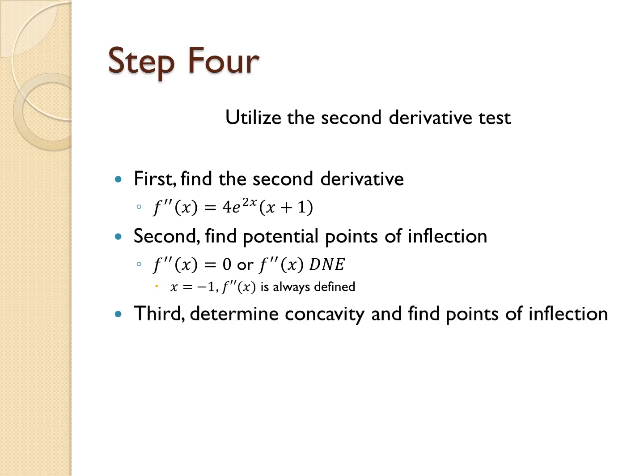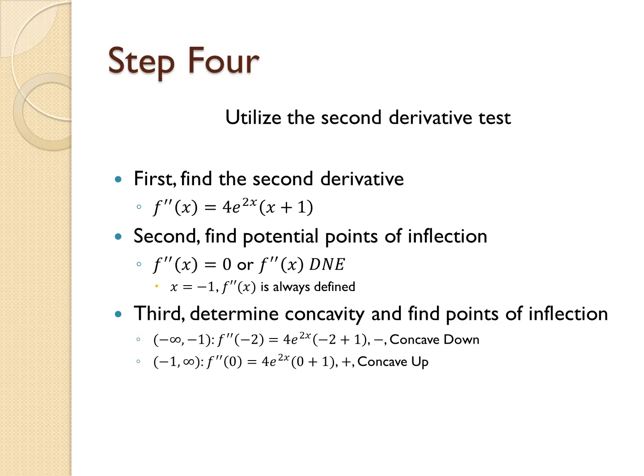We determine concavity by splitting along two open intervals. On the interval (-∞, -1), using a test point of x = -2, the output is negative, making this interval concave down. On the interval (-1, ∞), using a test point of x = 0, the output is positive, making this interval concave up. Evaluating the original function at x = -1, our point of inflection is at (-1, -1/e²).